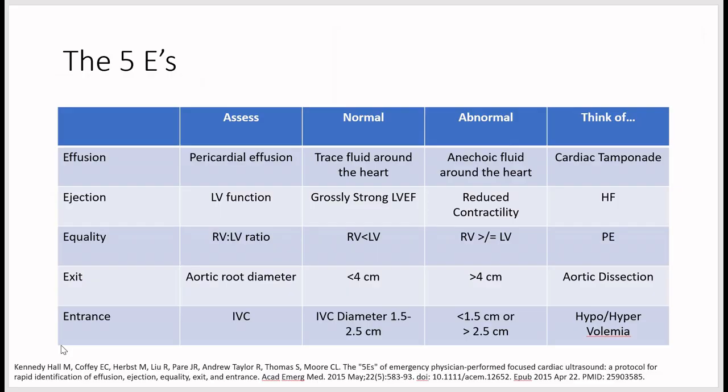The five E's stand for effusion, ejection, equality, exit, and entrance. For effusion, assess whether there is trace, moderate, or significant pericardial effusion. Normally a small trace amount is present; it is abnormal if there is a large amount of fluid. If there is a significant amount, consider cardiac tamponade.